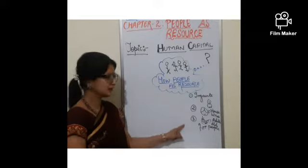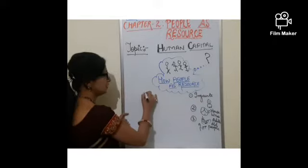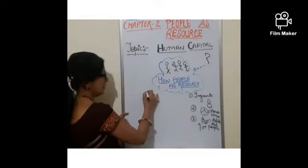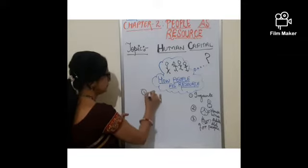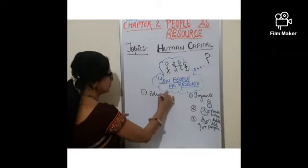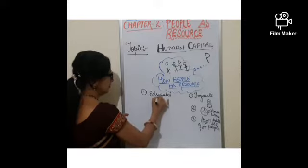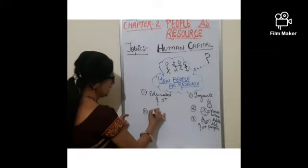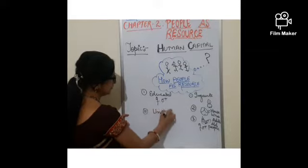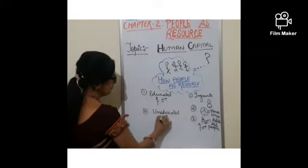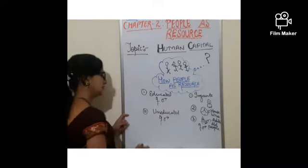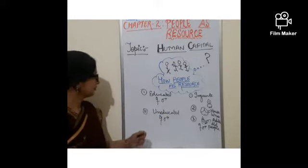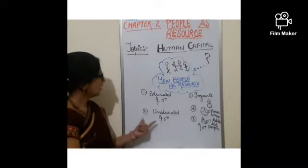Another set of population includes educated males and females. And yet another group consists of uneducated males or females — boys or girls.